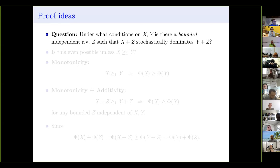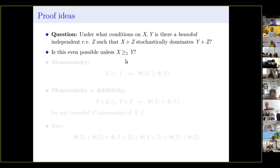At first you might think this is obviously not possible — moving mass right to left can't create an ordering that didn't exist before convolution. But as I'll show, it actually is possible, and it has interesting implications.